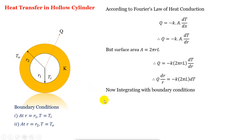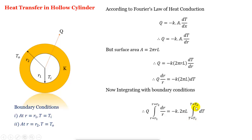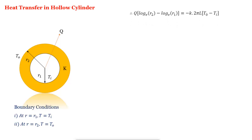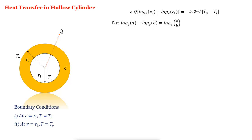Integrating Q·dr/R from R1 to R2, the integration of 1/R is log R. Applying the limits gives: Q·(log R2 minus log R1) equal to minus K·2πL·(To minus Ti). Using the identity log A minus log B equals log(A/B), this becomes Q·ln(R2/R1) equal to minus K·2πL·(To minus Ti).